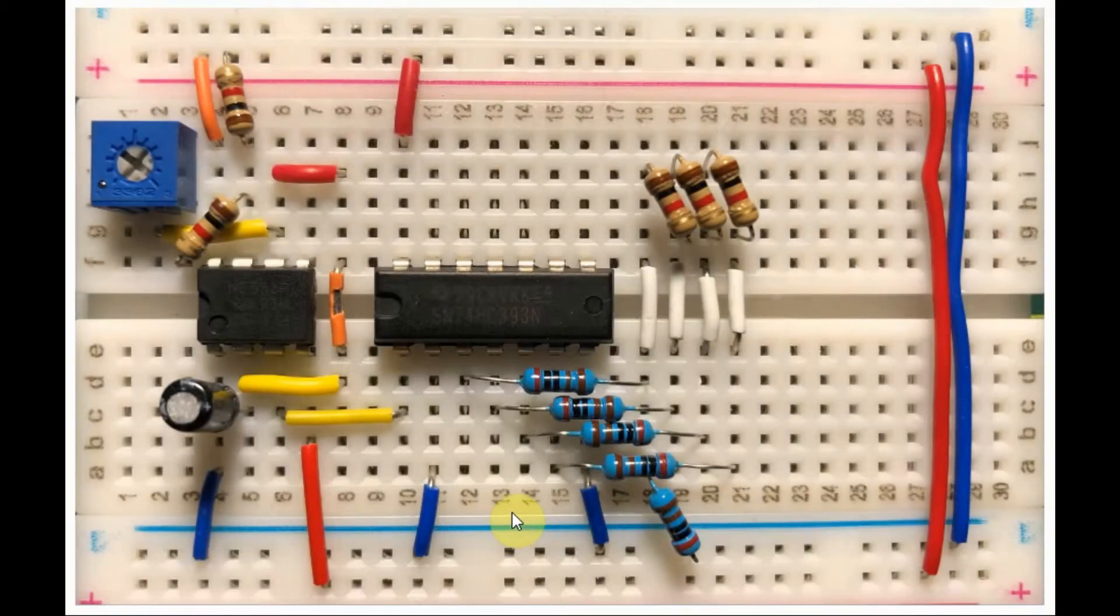Let's have a look at the components used in this project. For the clock generation, we are using a 555 timer in astable mode. And for the 4-bit counter, instead of the 74161, we are using the 74393, which is a dual 4-bit counter.